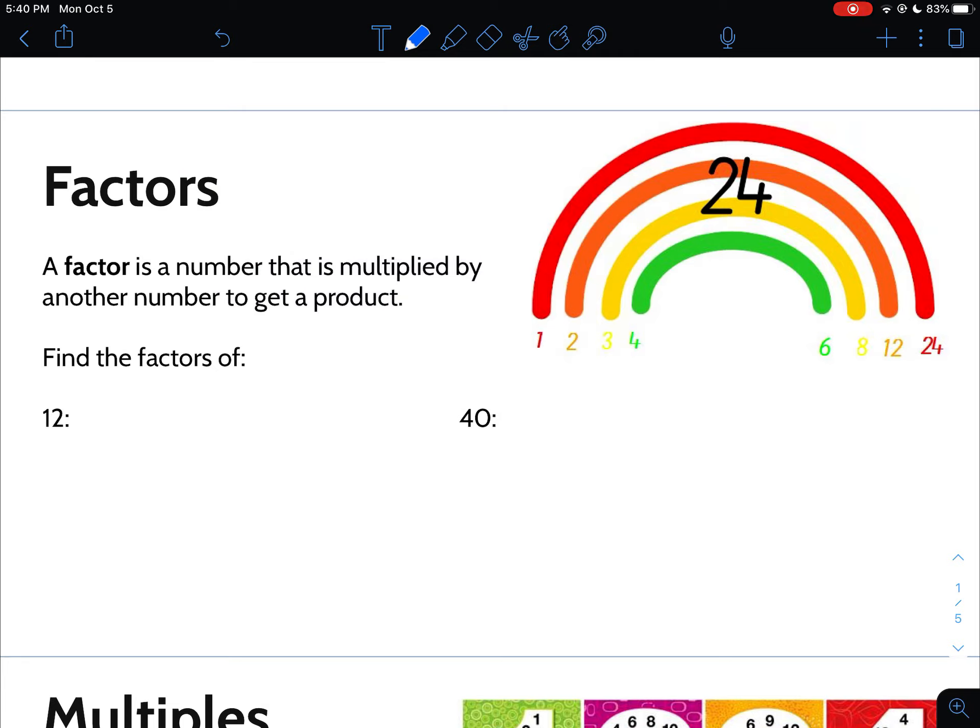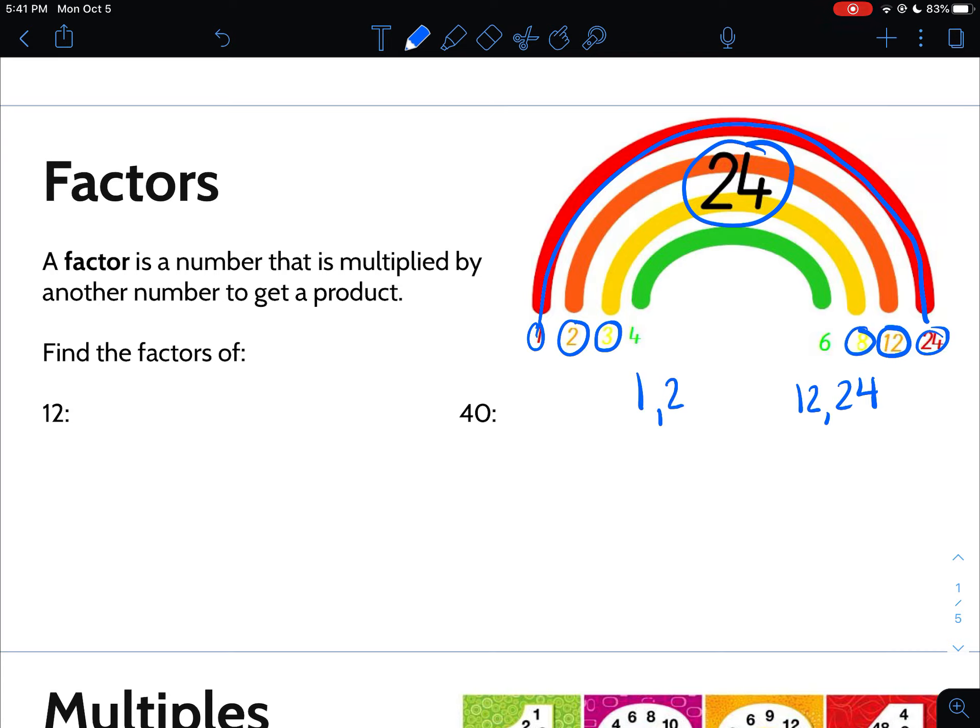I learned factors as kind of like a factor rainbow. If I was looking for the factors of 24, one times 24 would get me 24. So one and 24 are factors of 24. Then two and 12 are factors because two and 12 multiply together to get 24. Three and eight are factors. Notice the rainbow is connecting them. Three times eight is 24. And then four times six is also 24. So all of the factors of 24 are one, two, three, four, six, eight, 12, and 24.